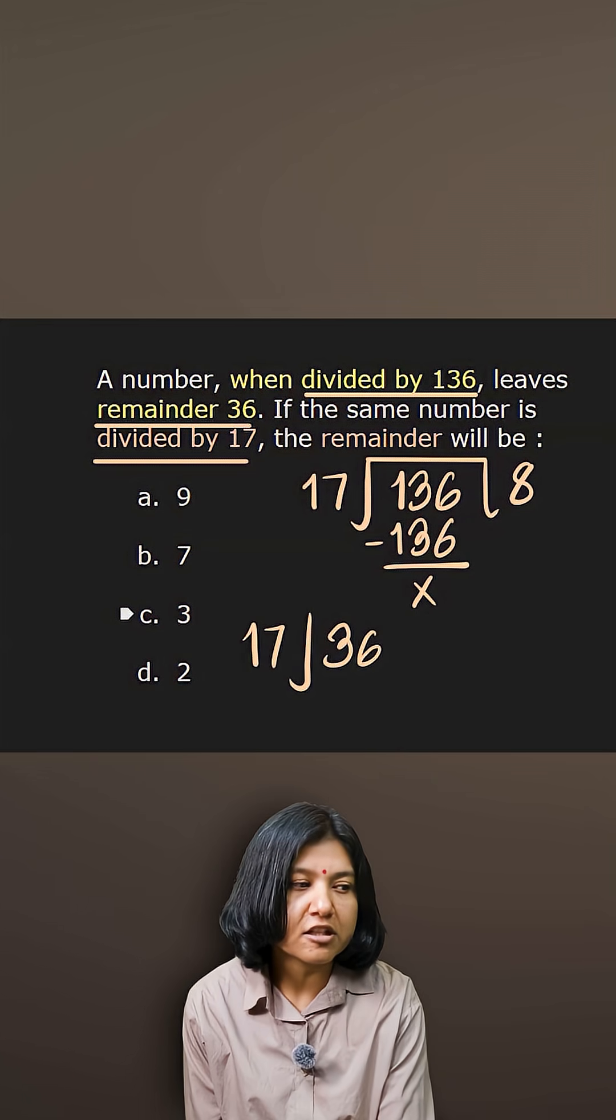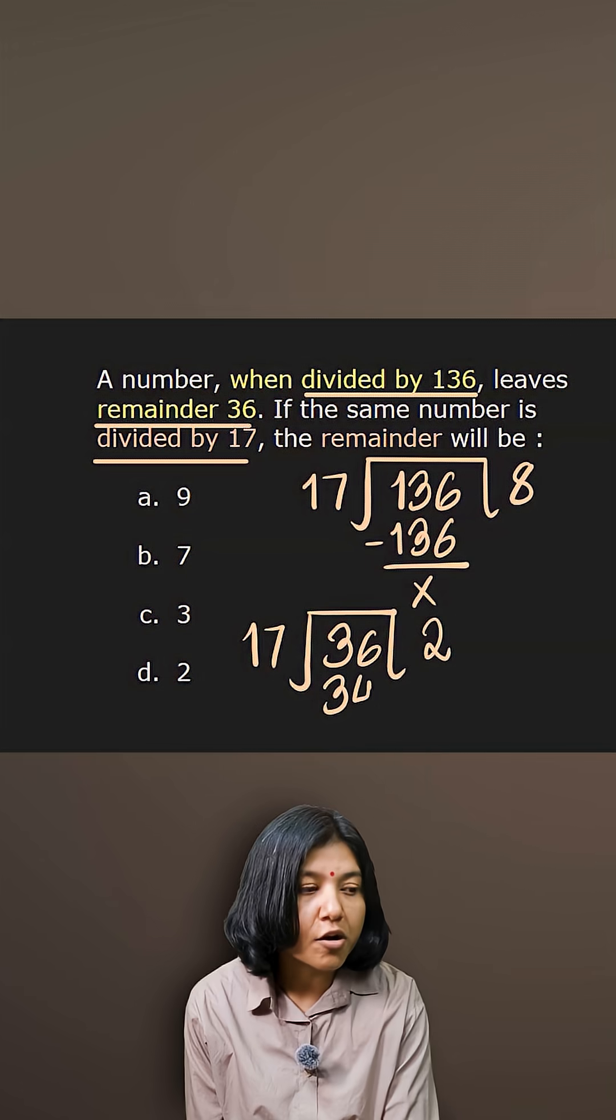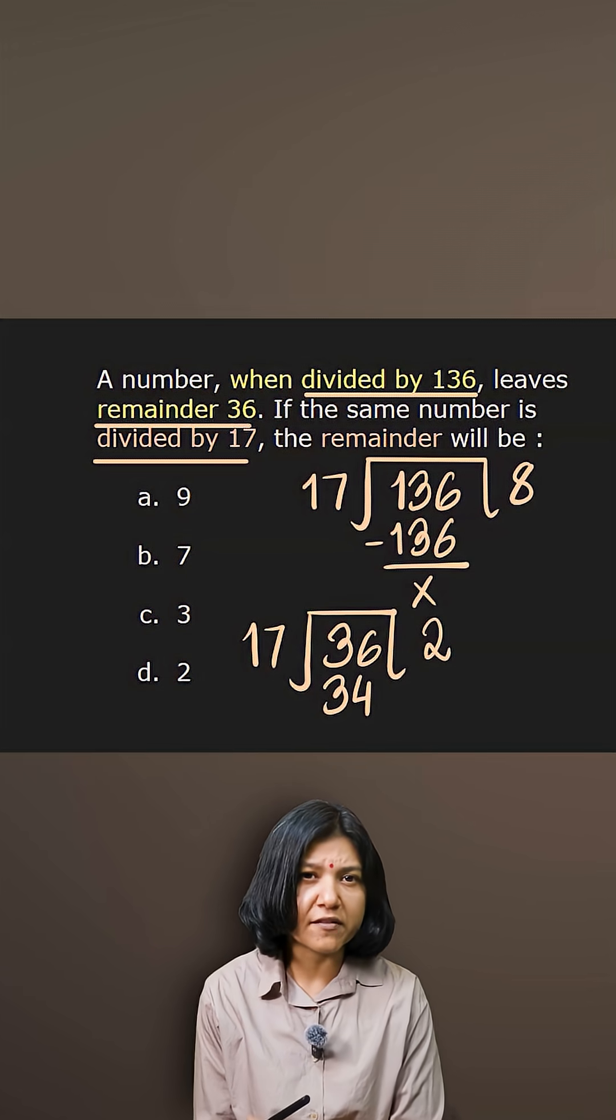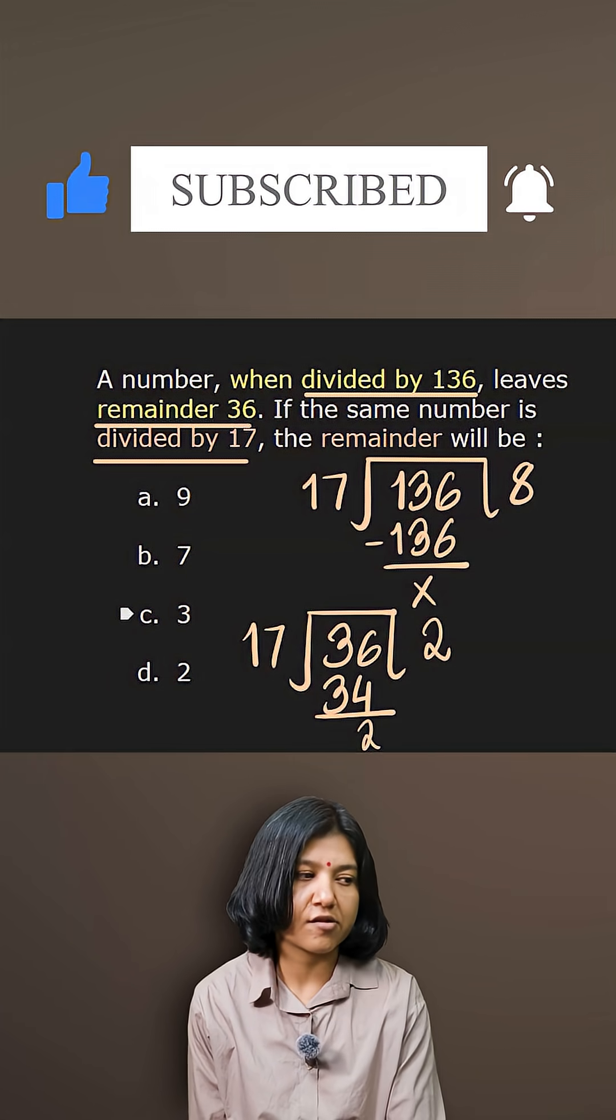So 17 times 2 is 34, so you want to remove 34 from the previous divisor, giving you 2 as the remainder. So hence the answer is 2.